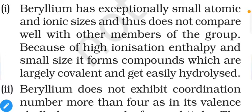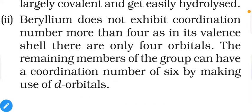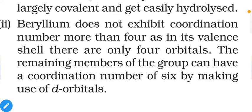The reasons for beryllium's anomalous behavior: beryllium has an exceptionally small atomic and ionic size and thus does not compare well with other members of the group. Because of its high ionization enthalpy and small size, it forms largely covalent compounds that can be easily hydrolyzed. Beryllium does not exhibit a coordination number greater than four, as its valence shell lacks d orbitals. The remaining members can achieve a coordination number of six by using d orbitals.